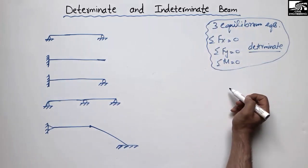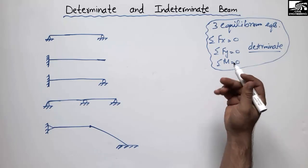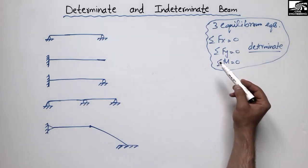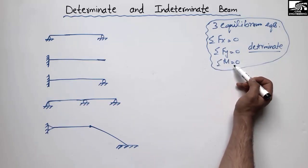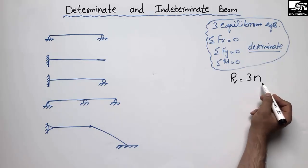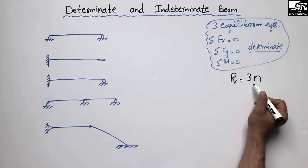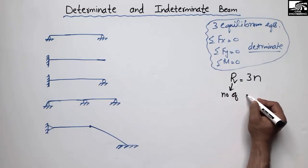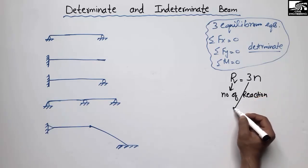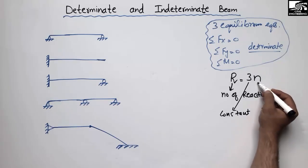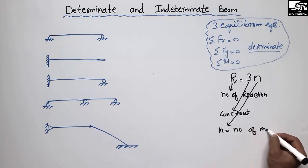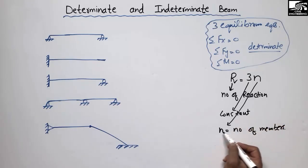These three equations play an important role in the statics of beams. To find out which beam is determinate and which is indeterminate, the main formula is R is equal to 3N. This is the basic formula used to differentiate between the two, where R is the number of reactions in a beam, 3 is a constant, and N is the number of segments or members.